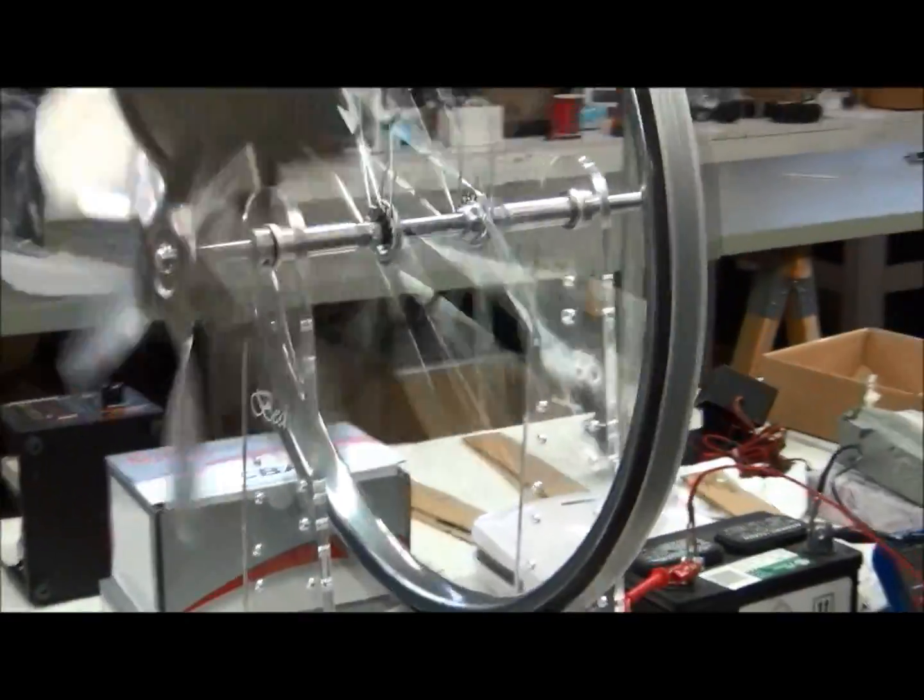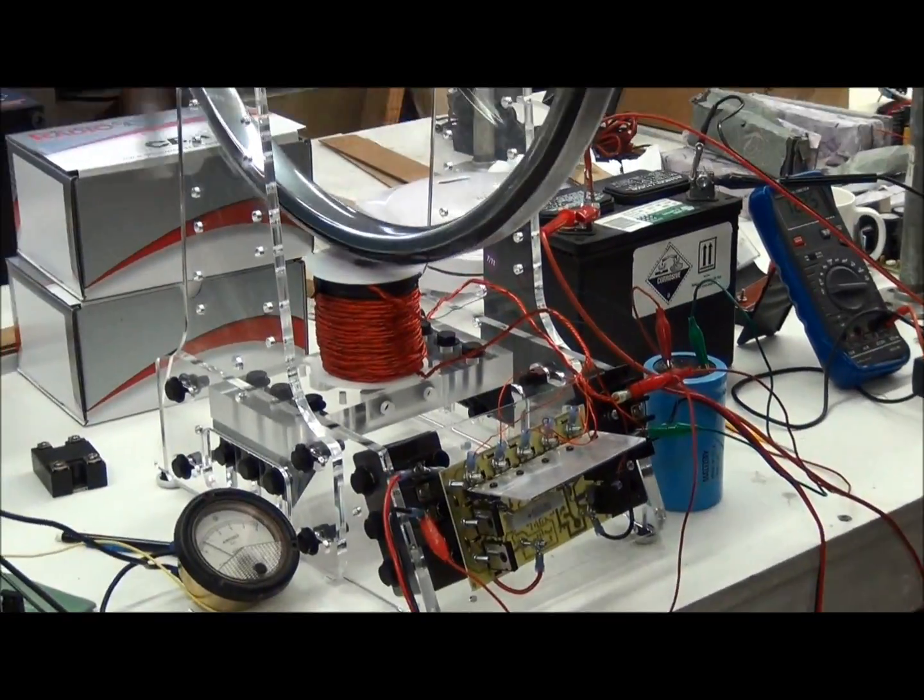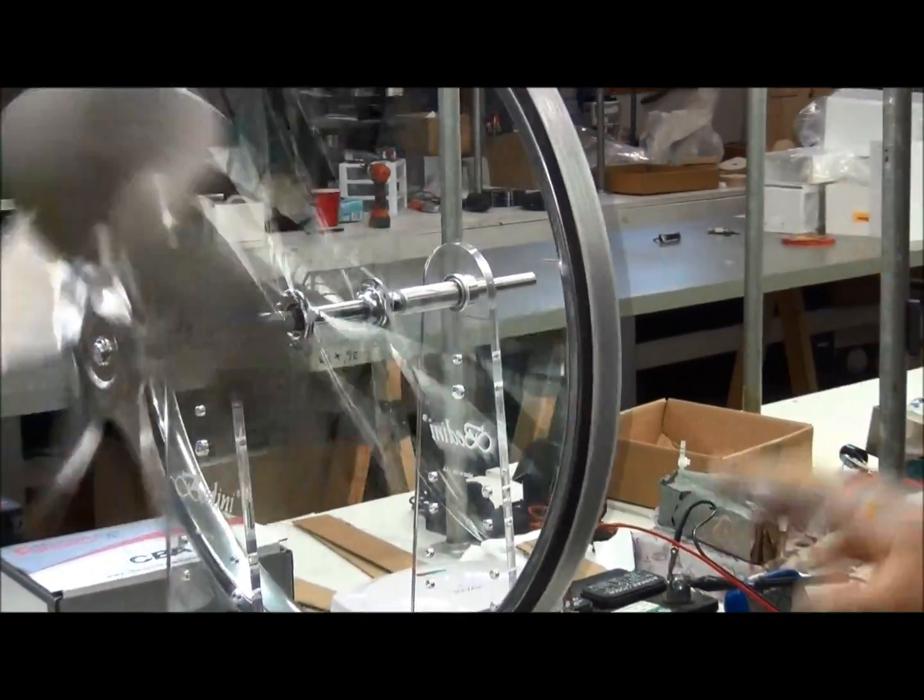What comes with the kit is the bike wheel, the frame, the fan, and the coil.